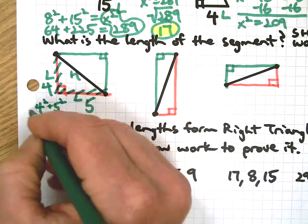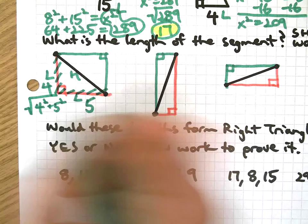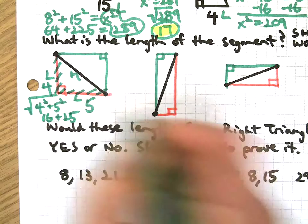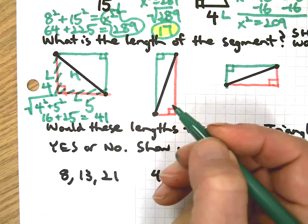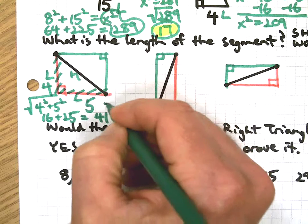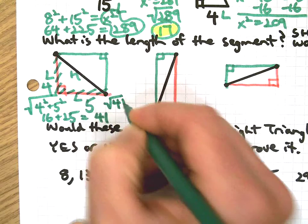So we have 16 plus 25. I'm sorry, my writing is so tiny, but I hope the work comes through. 41. I need the square root of 41, which we know is going to be close to 6, it's going to be between 6 and 7.